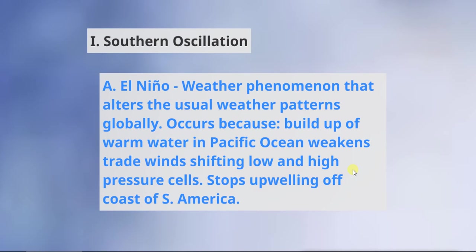So, Southern Oscillation — El Niño is a weather phenomenon that alters the usual weather patterns globally. It doesn't just alter patterns in Australia or South America; it changes weather across the entire globe — Europe, Africa, California, everywhere is altered slightly. It occurs because of a buildup of warm water in the Pacific Ocean weakening the trade winds and shifting the low and high pressure cells. It completely stops upwelling off the coast of South America and further fuels the shifting of those low and high pressure systems.